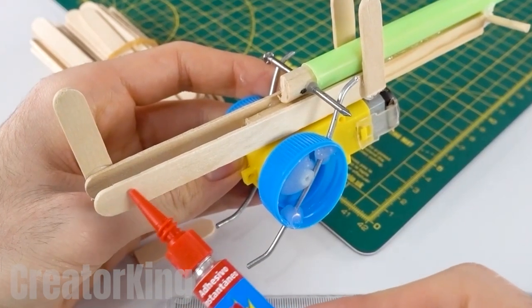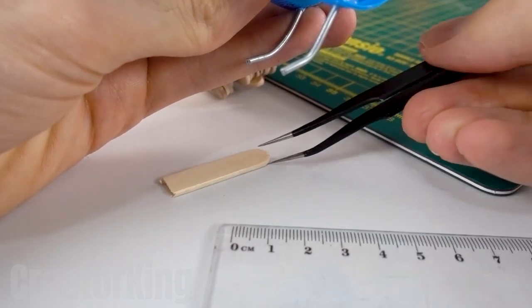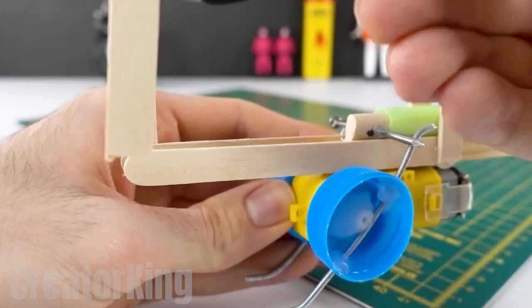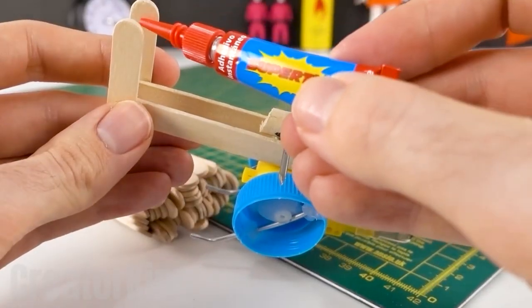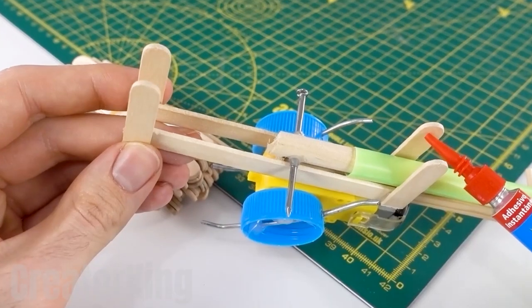Place the last of the supports and then reinforce them with even more popsicle sticks. Believe it or not, I'm also sick of so many wooden sticks, but they turn out to be a good material, resistant and cheap. One has to adapt or sink.